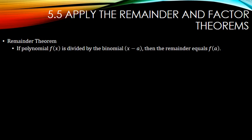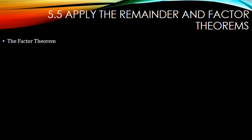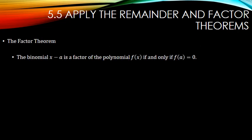The remainder theorem says that if we take a polynomial and divide by a binomial x minus a, then the remainder equals f of a. That's why we were able to do synthetic substitution way back in lesson 1. The factor theorem says that the binomial x minus a is a factor if and only if f of a equals 0 — in other words, if the remainder is 0, it's a factor.